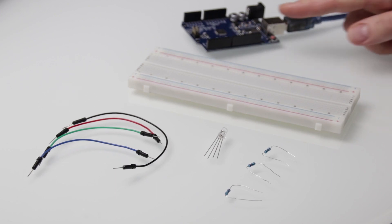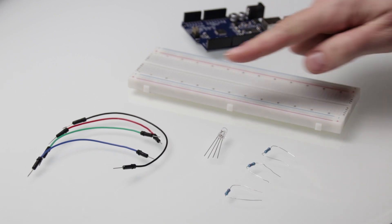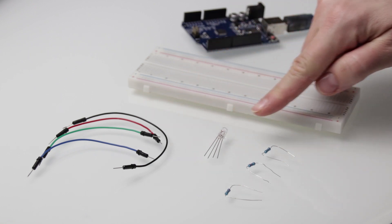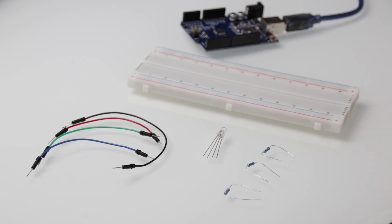To build our circuit we will need UNO R3, breadboard, four male-to-male jumper wires, RGB LED and three 220 ohm resistors.